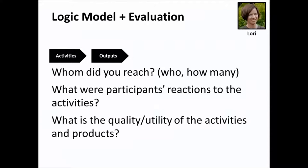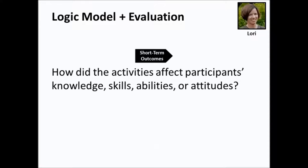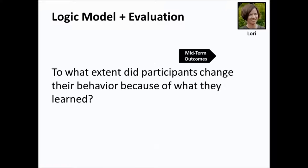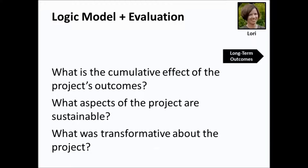For evaluation at the level of activities and outputs, plan to answer questions like who you reached, what they thought about their experience with the project, and what the quality or utility of the project's activities or products are. This is largely accountability-type information — it's important to have, but the evaluation shouldn't stop there. For short-term outcomes, the evaluation should determine how the project affected participants' knowledge, skills, abilities, or attitudes. The evaluation can then progress to answering questions about changes in practice and behavior, and further — looking at cumulative effects, what was achieved that can be sustained, and what was transformative about the project, pushing to demonstrate contribution to program-level aims.